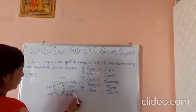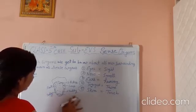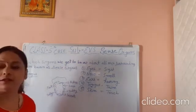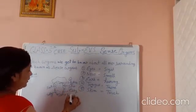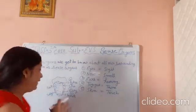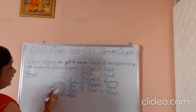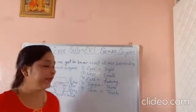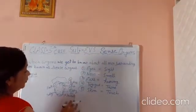There are four types of taste buds found in our tongue: firstly bitter, second sour, third salty, and fourth sweet. They are found in different areas of our tongue, and they help us feel different tastes of any food item.